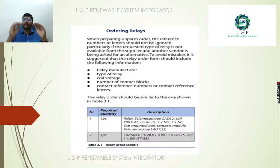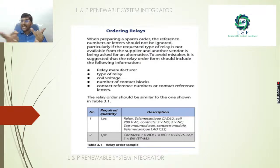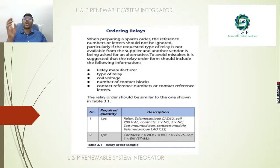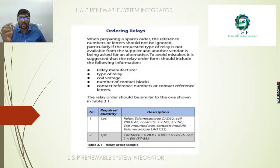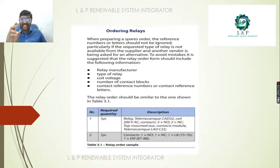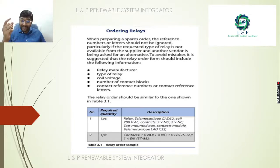When ordering a relay for a project, you need to collect the following information: relay manufacturer, type of relay, coil voltage, number of contacts or blocks needed, and contact reference letters. For example, if ordering one piece, you need a description including the relay type, coil voltage (e.g., 230V AC), number of contacts (e.g., 3 NO contacts and 2 NC contacts), and contact reference letters.